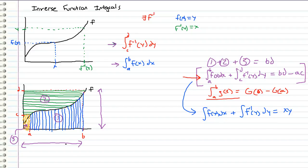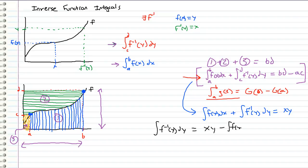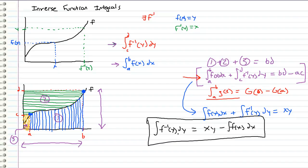We can see how that's the case because if we look back at our picture, a and b are the limits on x and c and d are the limits on y. When we evaluate x times y at the first point we get a times c, and at the second point we get b times d, which is why we get bd minus ac. So basically I'm converting this definite form into an indefinite form that we can more readily use. I'm going to rewrite this as: the integral of f inverse of y dy equals x times y minus the integral of f of x dx. And we can use this formula to evaluate integrals that include inverses, which is sometimes a lot easier than integration by parts.